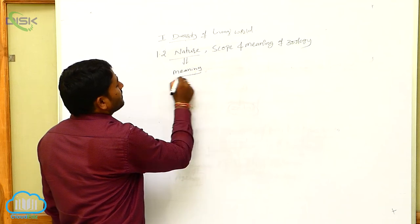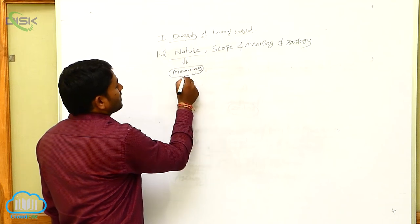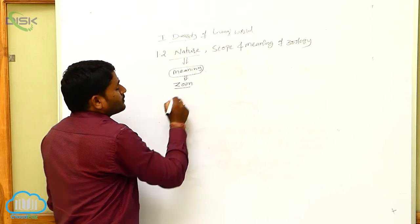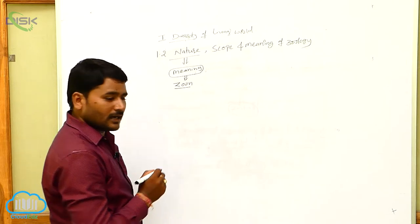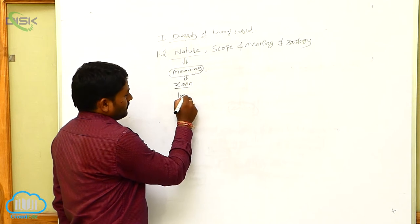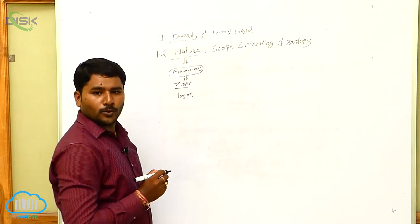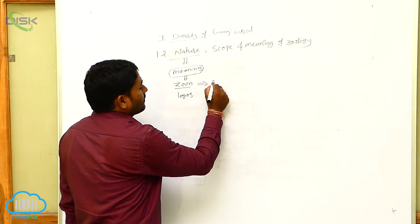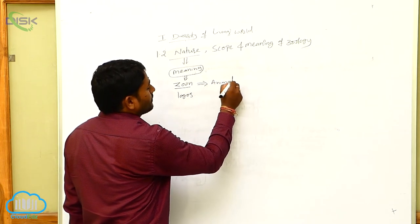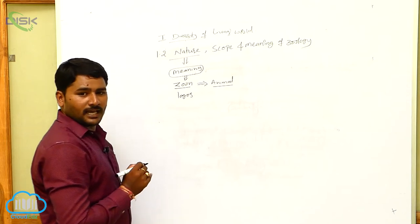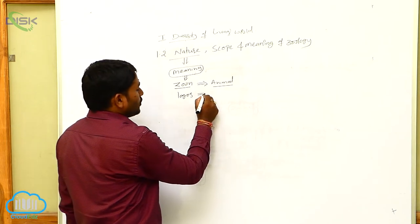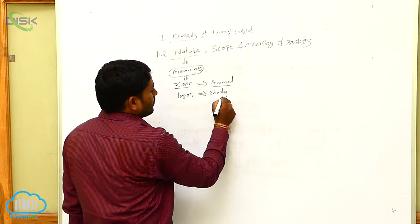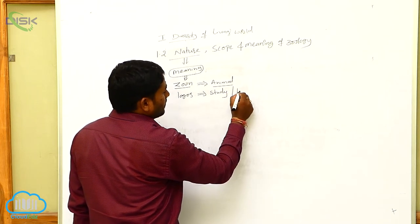What is the meaning of Zoology? The word Zoology came from 'Zwaan' and 'Logos'. Here, Zwaan means animal, and Logos means study or knowledge.